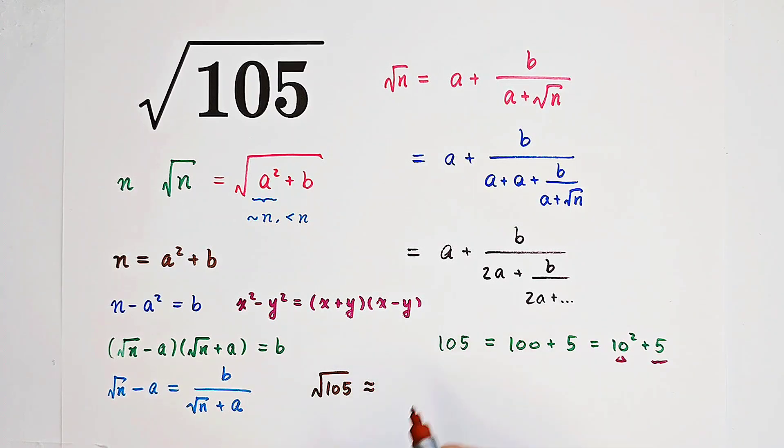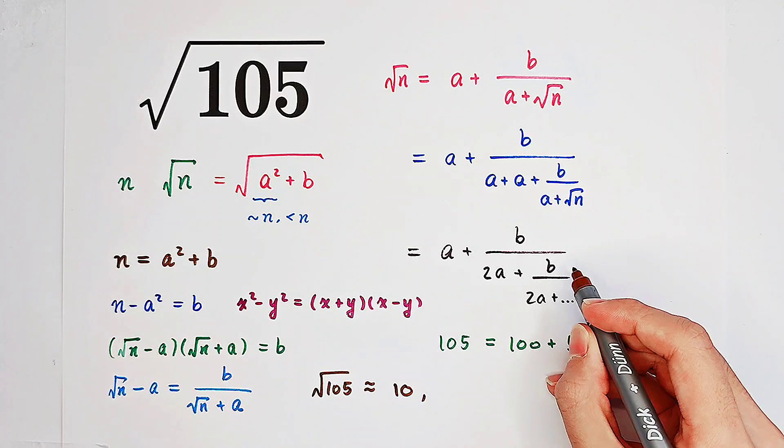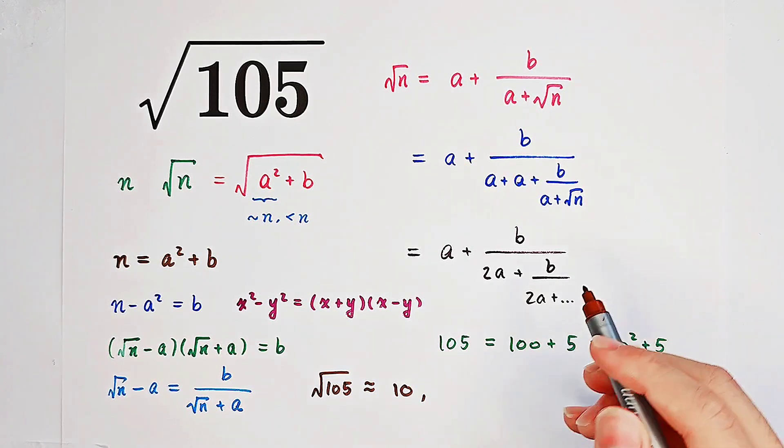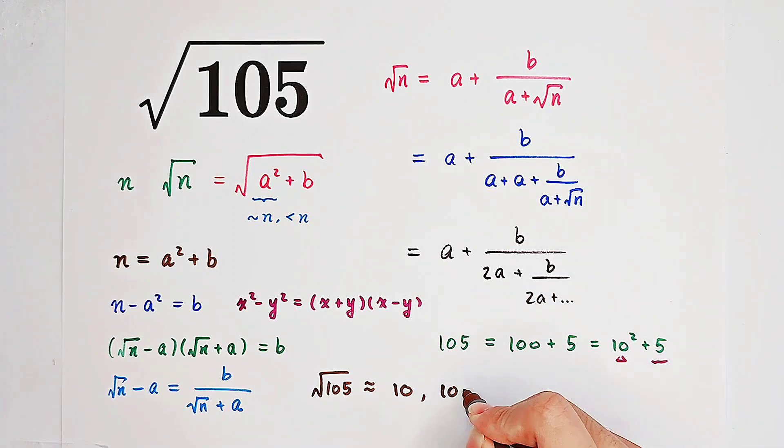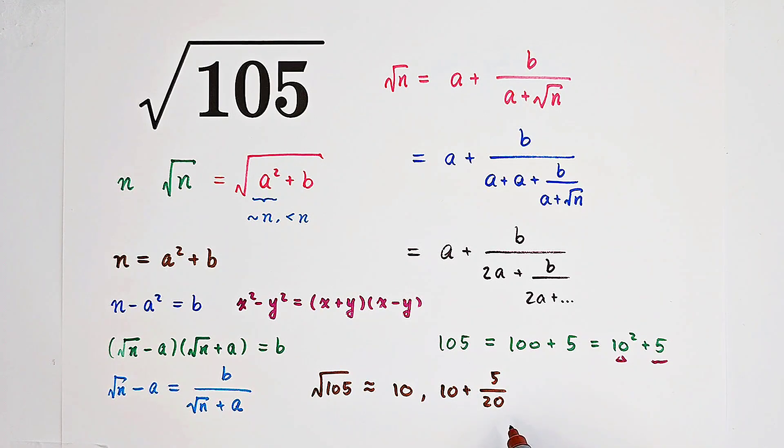It is approximately equal to, if you take 0 fractional lines, then you end up with 10. It is approximately equal to 10, isn't it? And if you take one fractional line, you just have a plus b over 2a, which is 10 plus 5 over, I will write here, 10 plus 5 over 20. 5 over 20 is 1 over 4, which is 0.25. So you're gonna end up with 10.25.